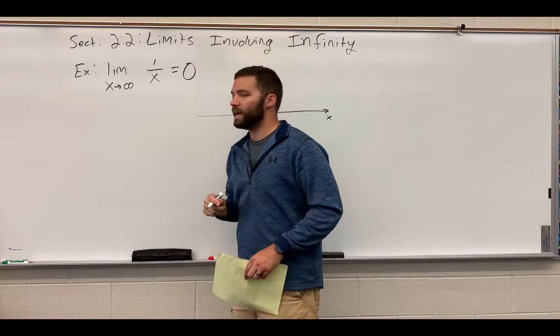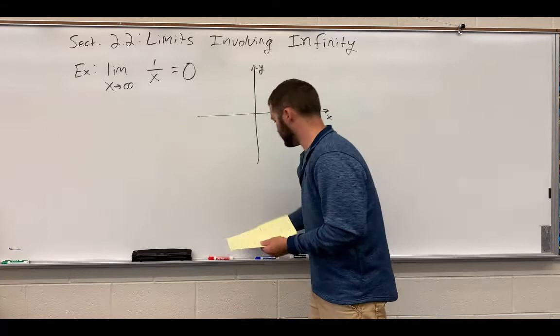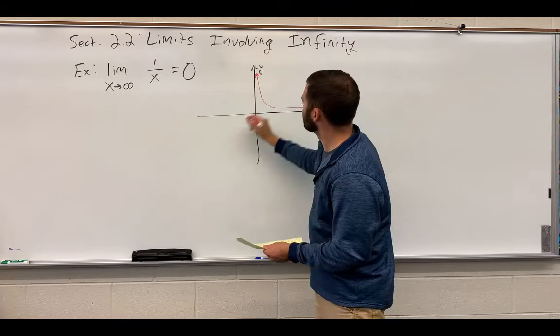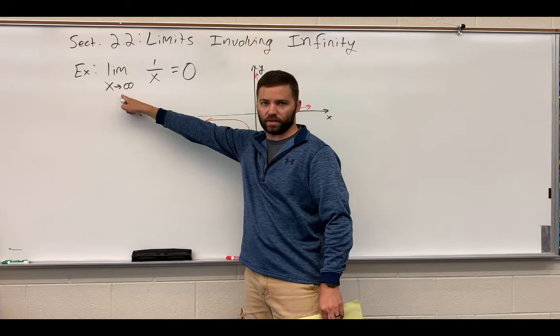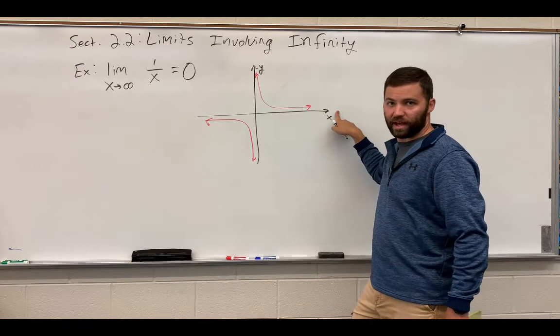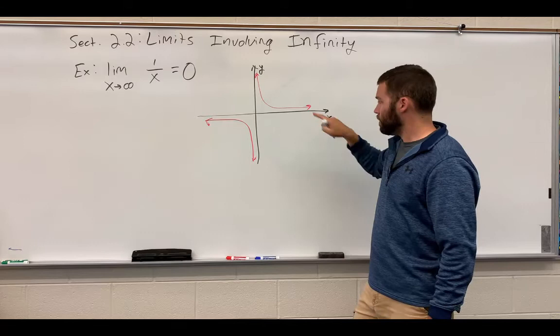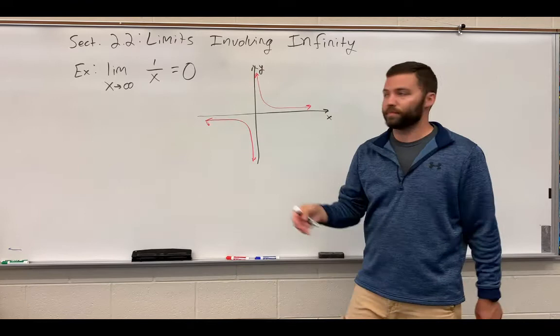You probably know that the graph of 1 over x looks something like this. You can tell from the graph that if you move to the right, as x approaches positive infinity, this curve gets closer and closer to the x-axis. It's asymptotic to the x-axis. The x-axis is y equals 0, so the function is approaching 0. We can get it graphically or what you might call analytically or numerically.